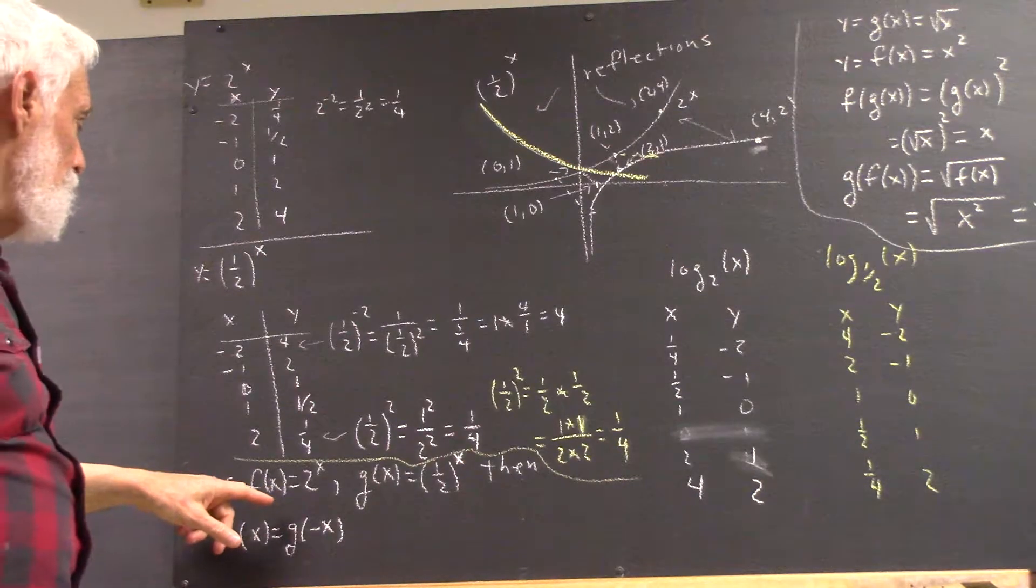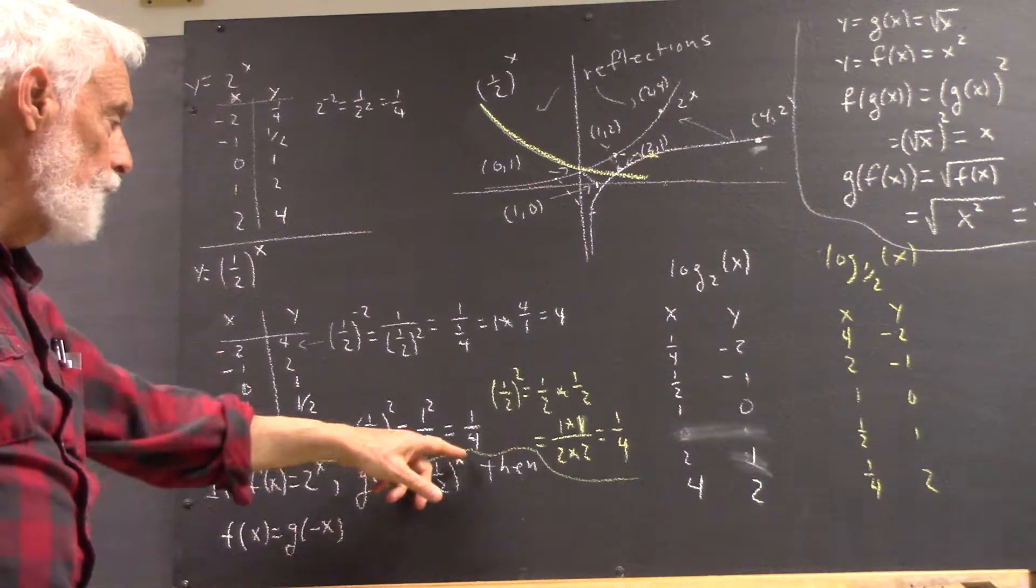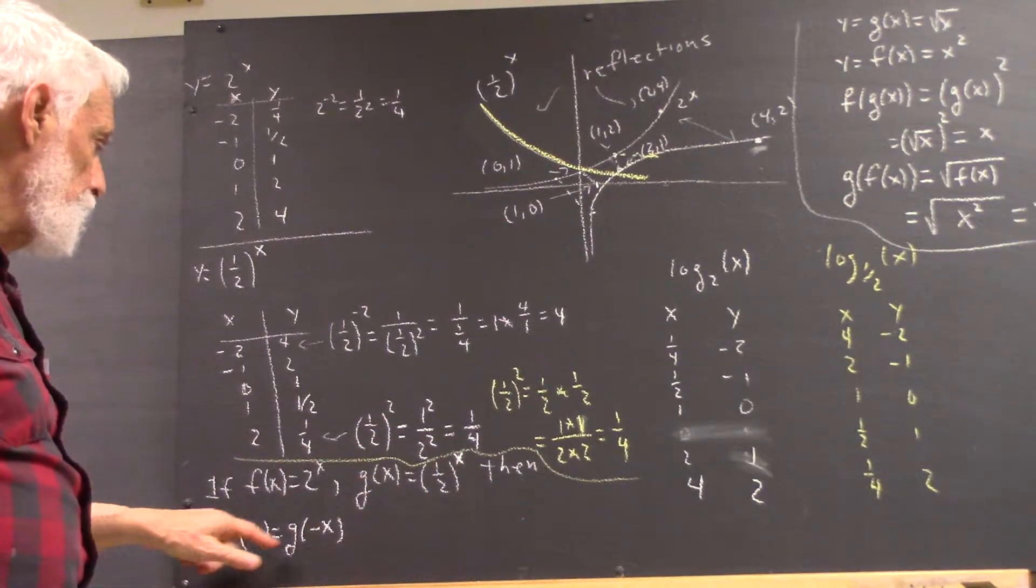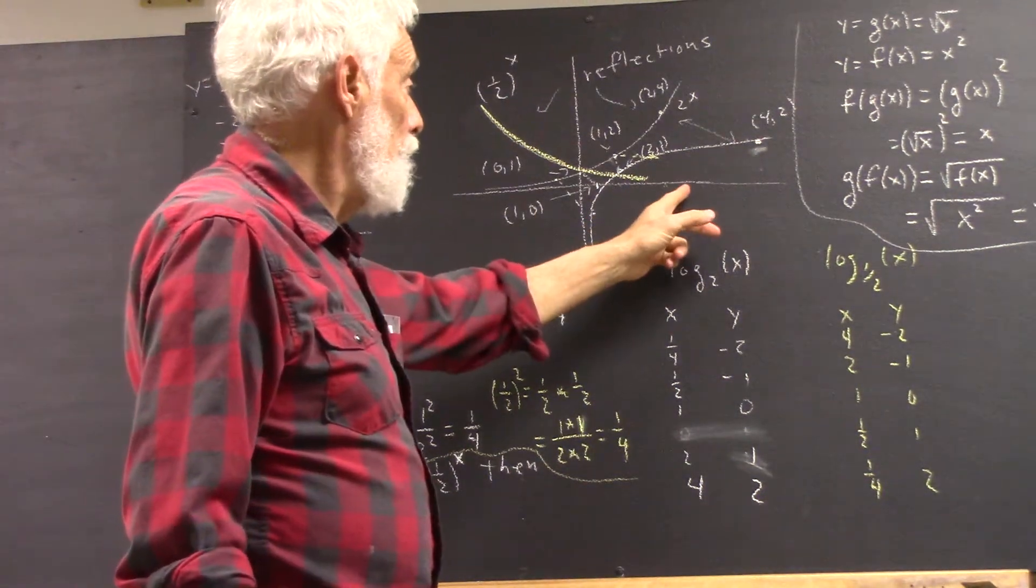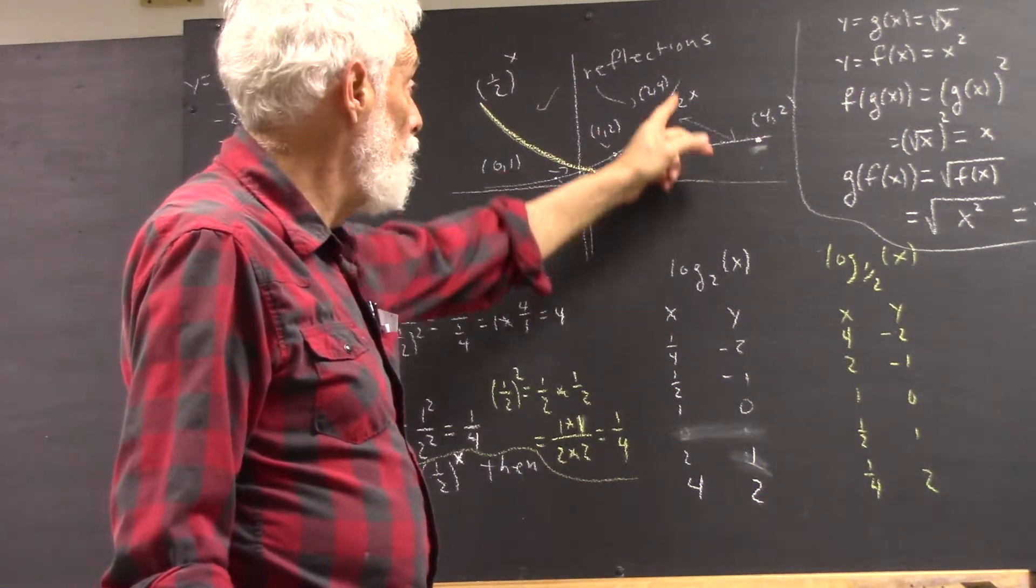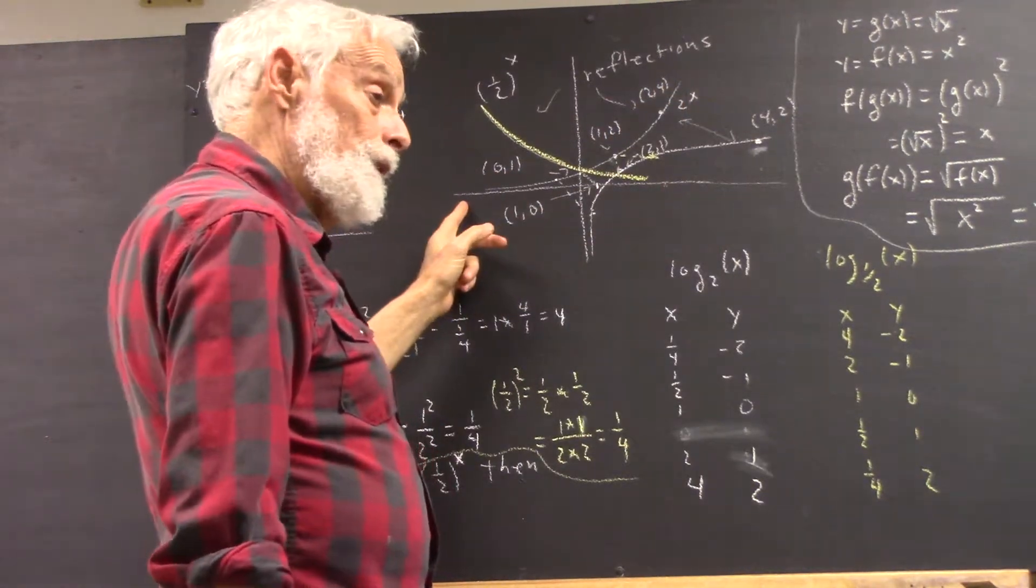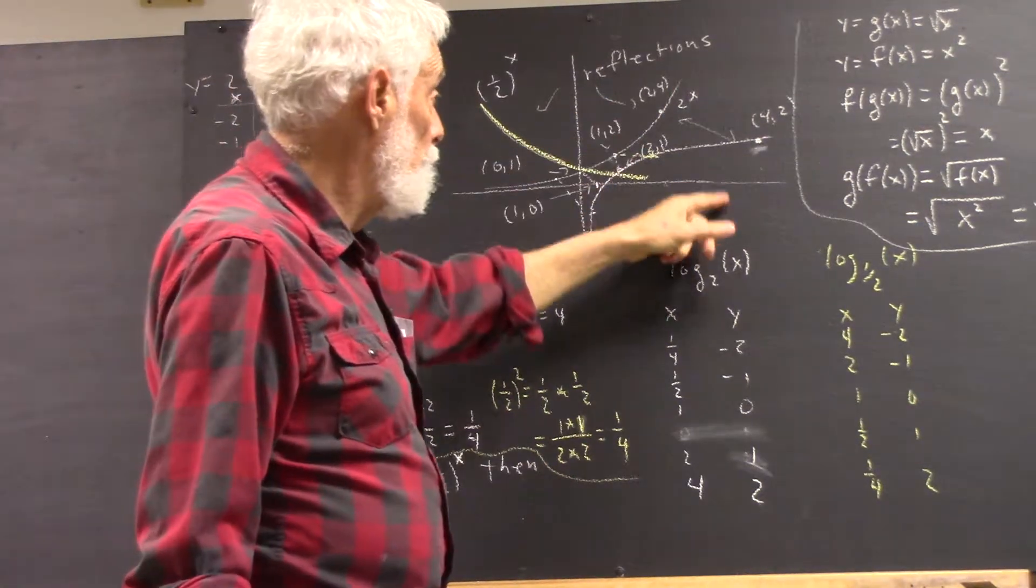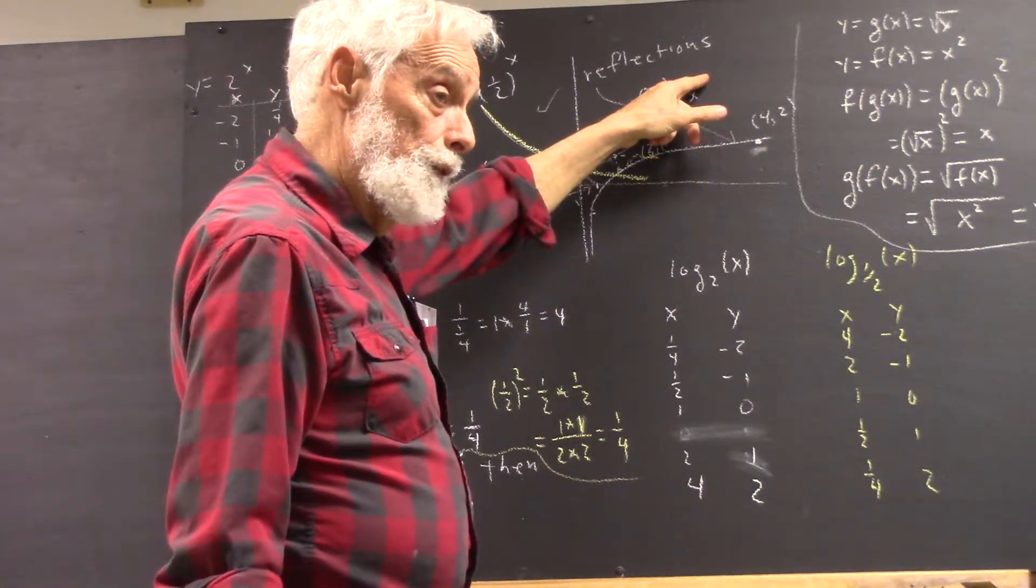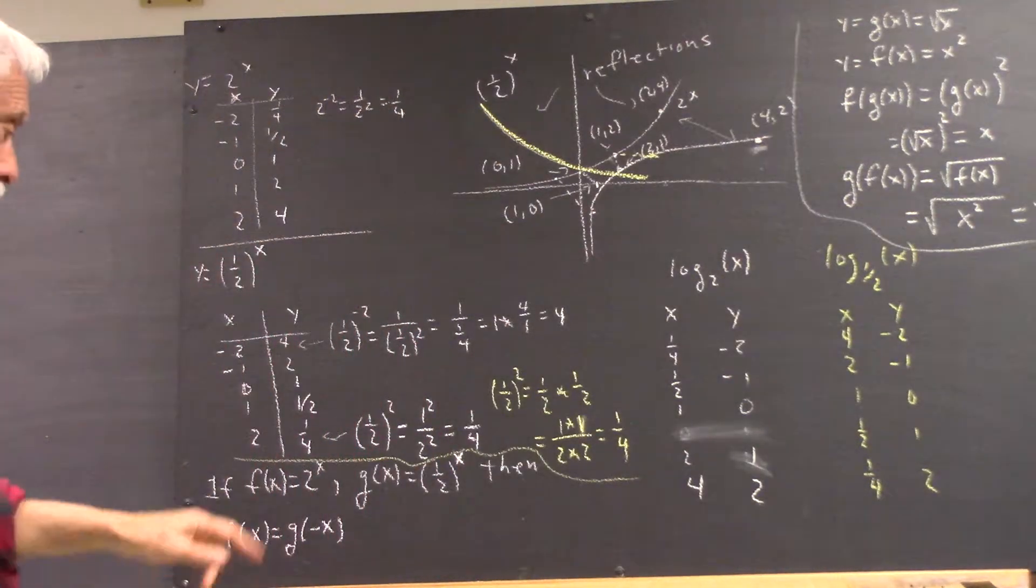Now, that means, okay, if f of x is 2 to the x, and g of x is 1 half to the x, then f of x equals g of negative x. F of x, if I have an x out here, f of x is the y value we get here. Now, if I go to negative x, that y value is going to be here. So if this is our f of x function, our f of x is equal to g of negative x. You need to reflect on that.